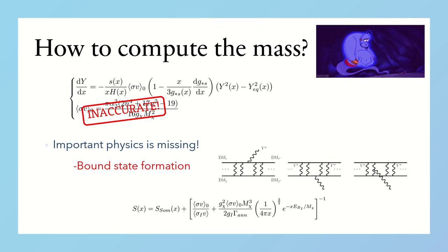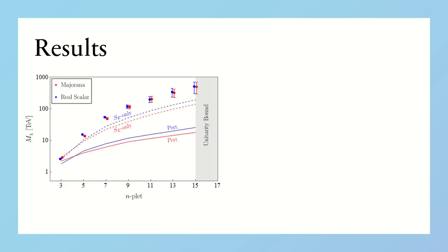Once we include all these non-perturbative effects in the computation of the annihilation cross-section, we can finally solve the Boltzmann equation and then extract a prediction for the thermal masses. Our results are summarized in this plot, where the red and blue dots represent the predicted thermal masses for the scalar and fermionic candidates, respectively, as a function of n.